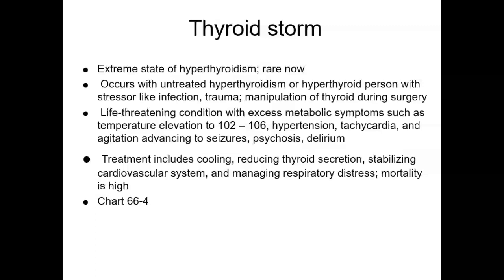When caring for a patient with hyperthyroidism, even after a thyroidectomy, assess temperature often because an increase of even 1 degree Fahrenheit may indicate an impending thyroid crisis. If an increase occurs, report it immediately to the primary health care provider. Emergency measures to prevent death vary with the intensity and type of changes. Interventions focus on maintaining airway patency, promoting adequate ventilation and gas exchange, reducing fever, and stabilizing the hemodynamic status. Please review Chart 63-5, Emergency Care of the Patient During a Thyroid Storm, on your own.